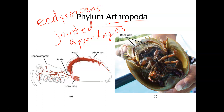What the arthropods all have in common — there are several different classes we're going to go over — is that they all have jointed appendages. This horseshoe crab has a cephalothorax. Some arthropods have a head and a thorax that are separate, but some have them together. The thorax is like the chest region, so a cephalothorax is a head and chest all together as one segment.